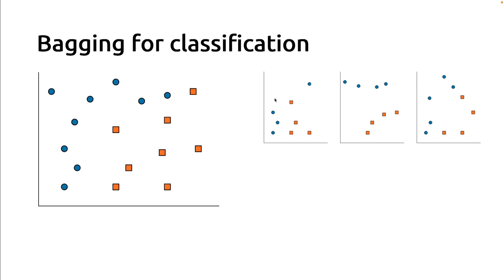The bootstrapping part is to generate three variations of the original training set by taking at random a subset of the data points. For instance, those four orange points here are just a random subset, but those orange data points here have been left out — they are not part of this first bootstrap sample. However, those two points that were left out here are part of the second one. Here we just used three bootstrap samples, but in practice we would use hundreds of them. On average, each data point of the original training set will appear many times in independent bootstrap samples.